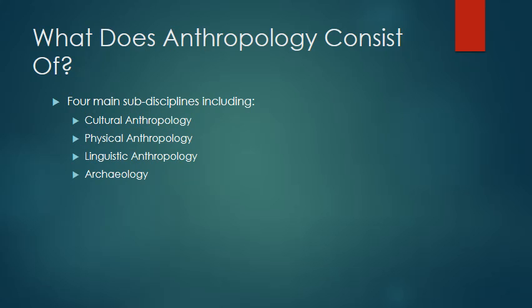What does anthropology consist of? Four main subfields including cultural anthropology, physical anthropology, linguistic anthropology, and archaeology.